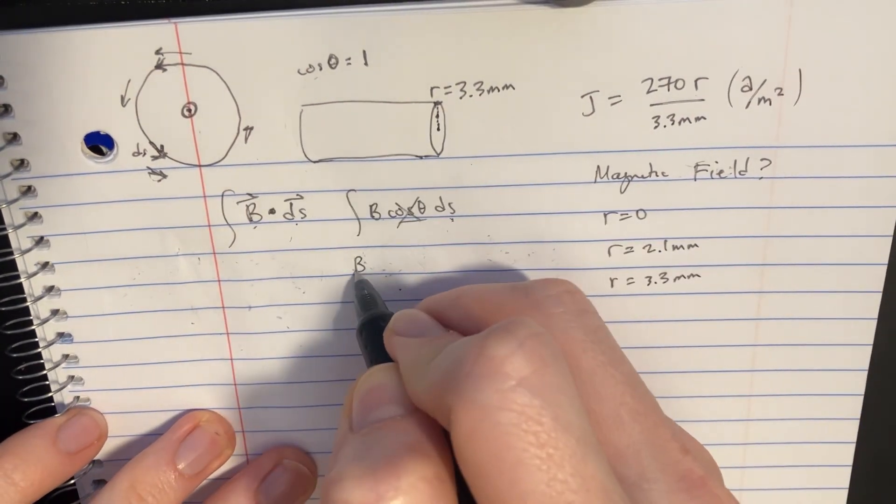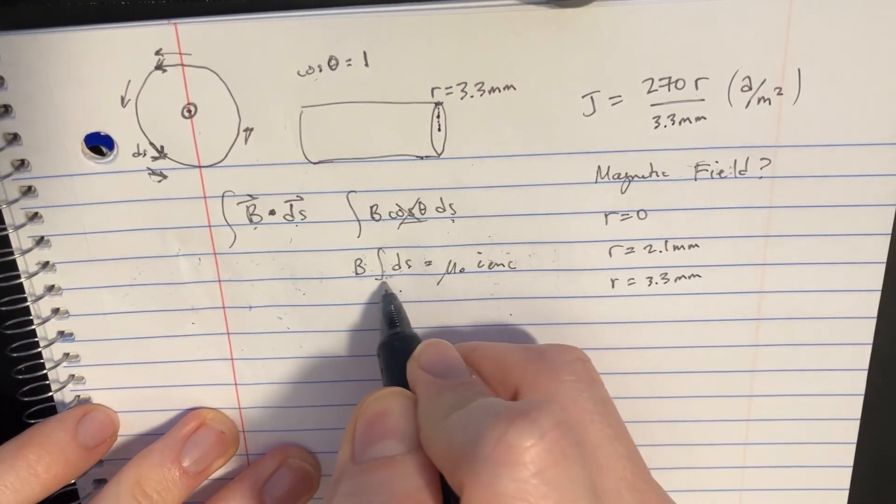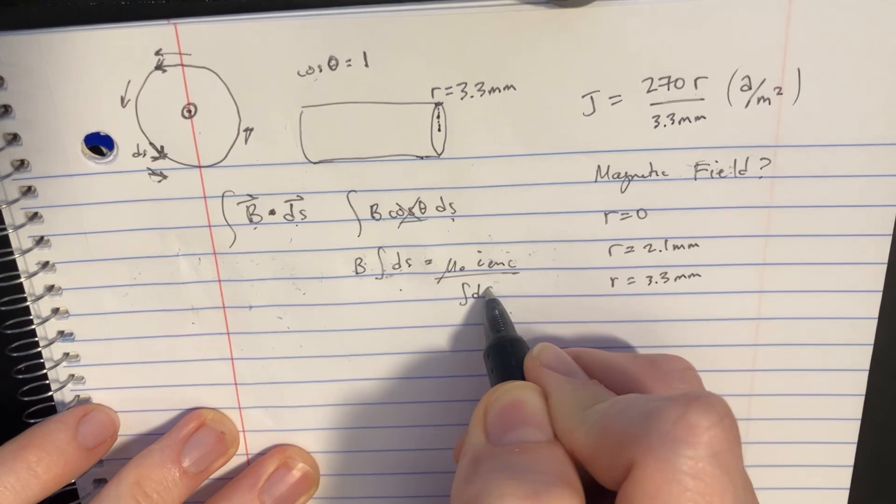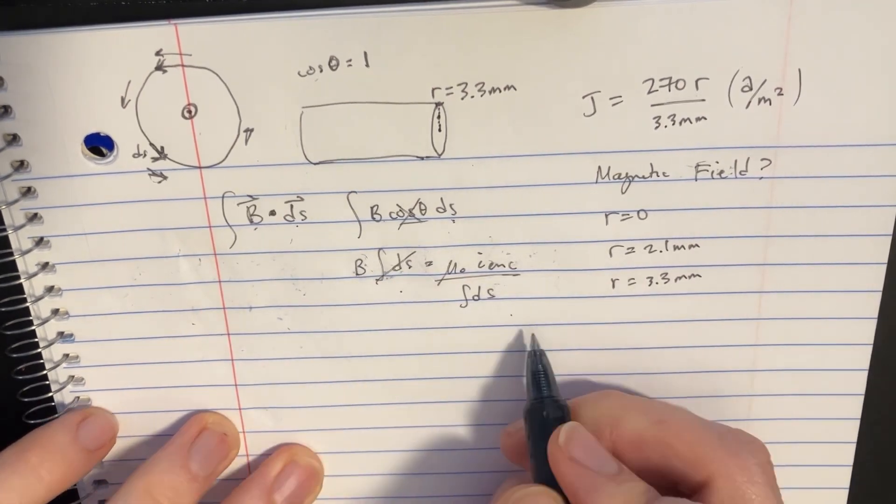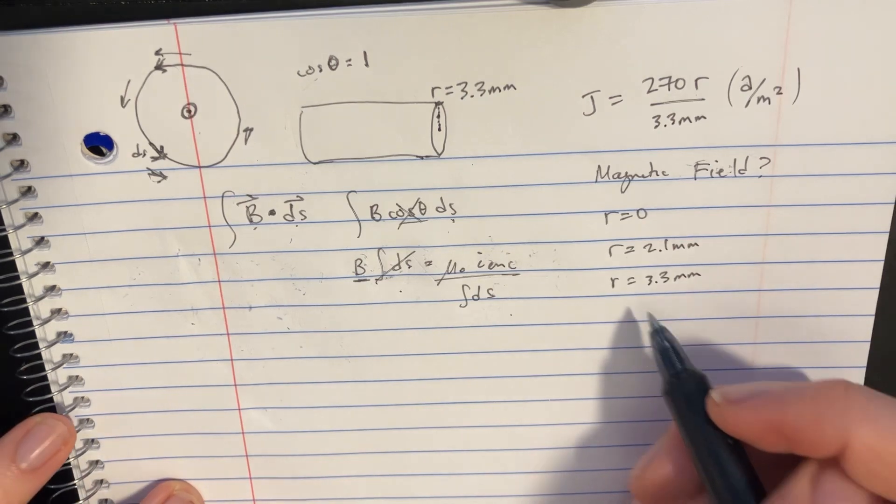Let's take our B integral ds, set that equal to mu naught i enclosed, and I'd like to divide both sides by the integral ds, so that way I'm left with the B on this side, so I know what the magnetic field is at that particular radius.